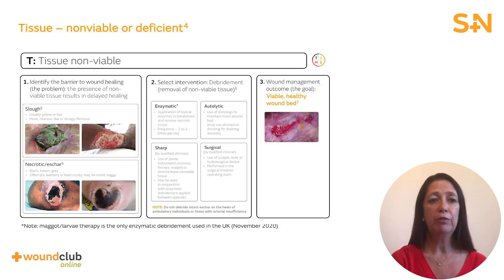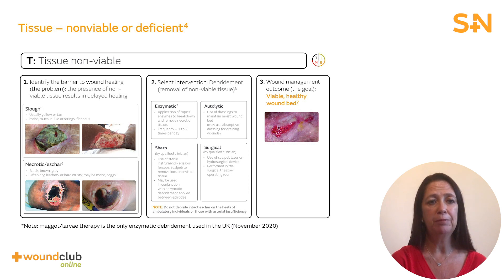For this section, we will refer to the T in TIME — tissue, non-viable or deficient. The goal is to assess for and identify the type of non-viable tissue and establish a plan and goals for management. Where tissue is non-viable or deficient, wound healing is delayed. Necrosis, eschar and slough are terms that describe non-viable tissue. For epidermal cells to migrate across a wound surface, a well-built extracellular matrix is required. Therefore, early interventions to remove devitalised tissue are an essential part of wound management.